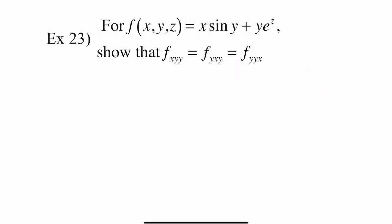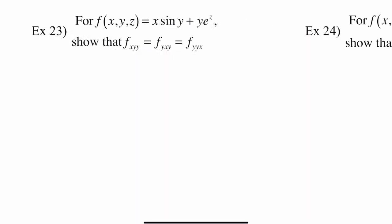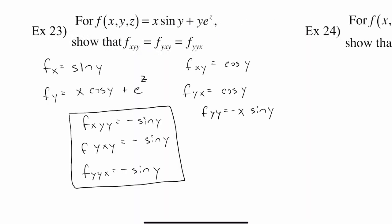There is actually no limit to how many times you can take the derivative of these partial derivatives. Here we're finding a third-order derivative: fxyy, or fyxy, or fyyx. The process is exactly the same as the last example. Go ahead and pause this video and figure out what these three partial derivatives are — if you did everything correctly, all three of them should be the same. And here is what I got as an answer: in the end, all of them equaled negative sine y.